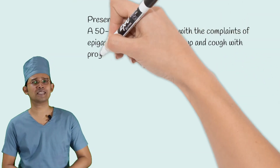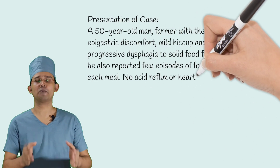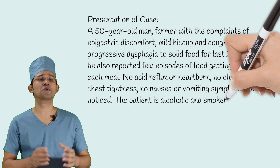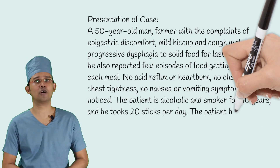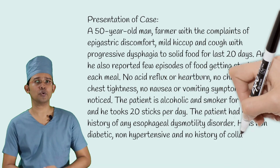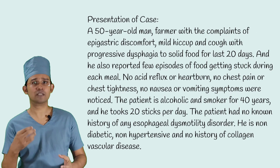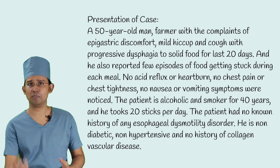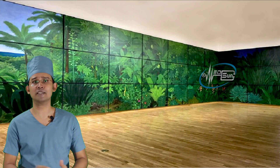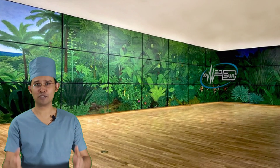Now the presentation of the case. A 50-year-old male farmer presented with complaints of epigastric discomfort, mild hiccough, and cough with progressive dysphagia to solid food for the last 20 days. He also reported a few episodes of food getting stuck during each meal. No acid reflux, heartburn, chest pain, chest tightness, nausea, or vomiting symptoms were noted.